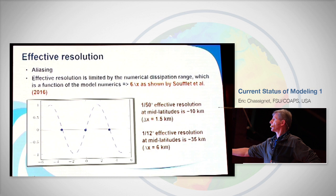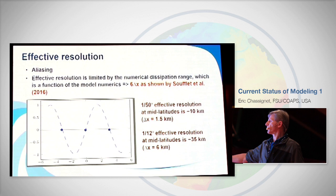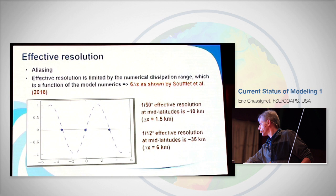So if you look at 1/50th degree — about 1.5 km at mid-latitudes — you can only truly resolve the beginning of the sub-mesoscale at about 10 km. 1/12th degree, which is the most common right now, gives you about 35 km effective resolution. So you have some mesoscale features that are reasonably well resolved there.